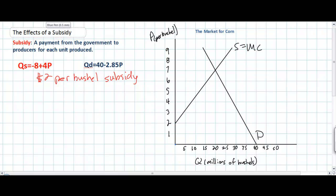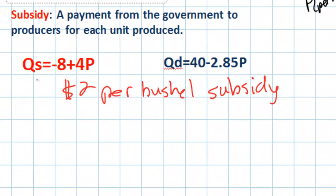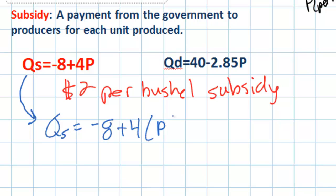As recalled from a previous video lesson, a tax leads to a decrease in the price seen by producers below what consumers actually pay. A subsidy has the opposite effect. A subsidy for corn producers essentially means that whatever price consumers pay, producers will receive two additional dollars above that price. So we can come up with a new supply equation, which will equal QS = -8 + 4 times the price consumers pay plus an additional two dollars. This tells us how producers will respond to this subsidy.